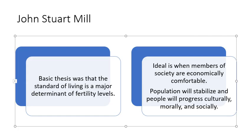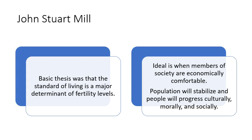Not long after Malthus wrote his ideas, John Stuart Mill offered a counter view which suggested that human population was within our control, in that we would eventually see a leveling off of population when people achieved a level of economic comfort that they could realize. The standard of living becomes a major determinant of fertility levels, and people are more likely to have kids if they feel like their kids can have a good life.